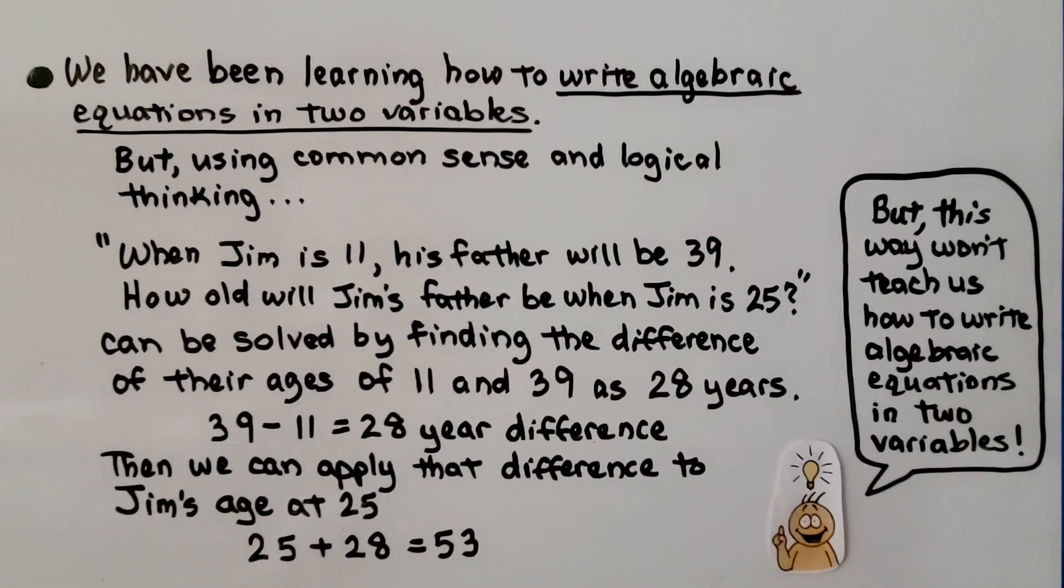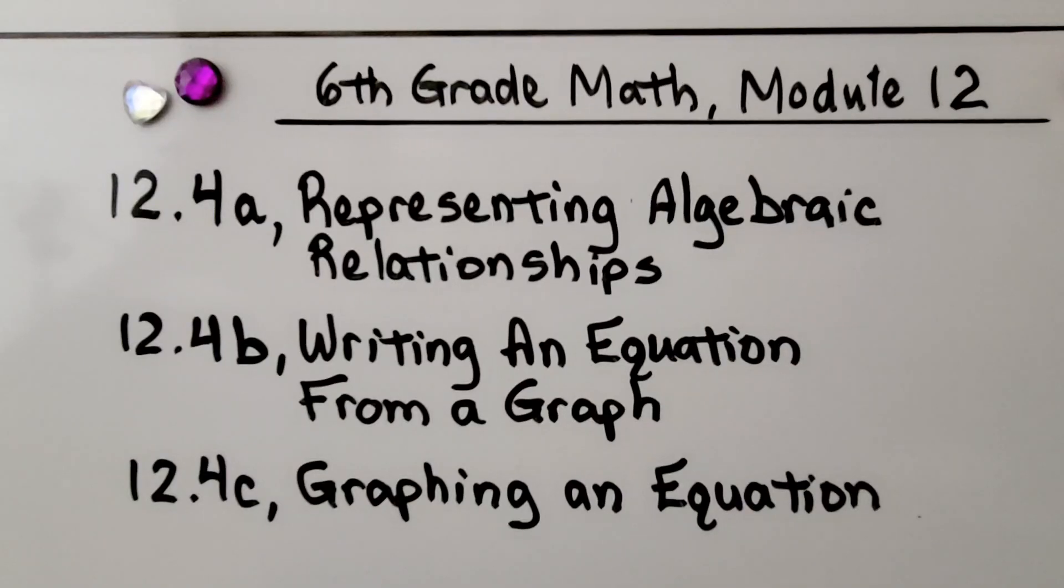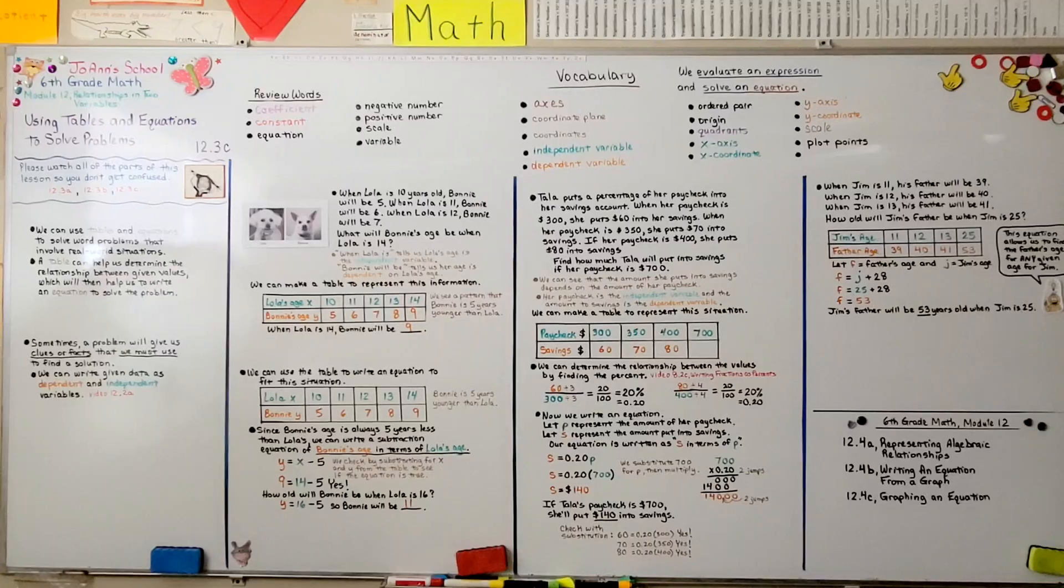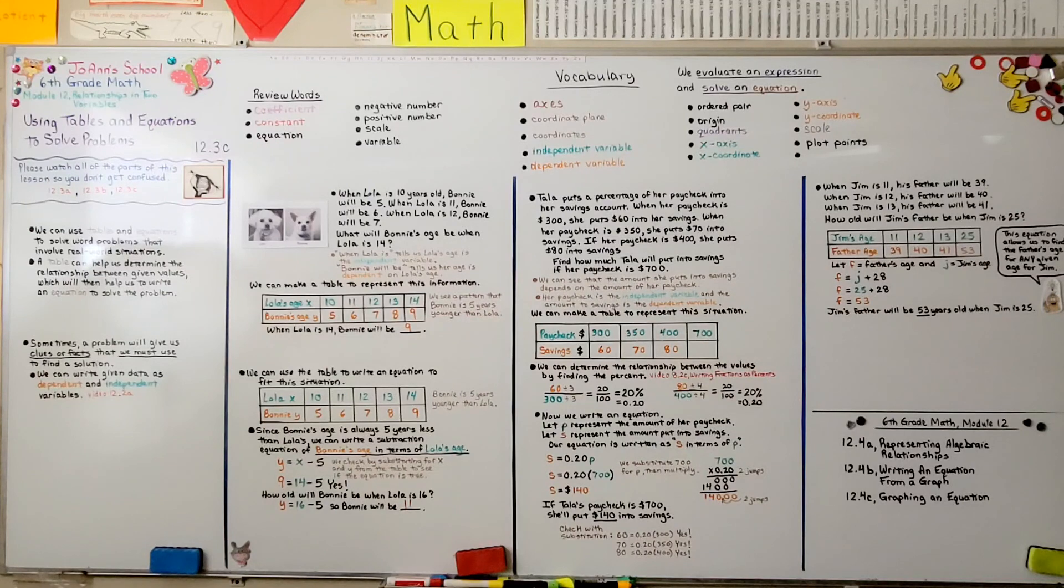So we're finished with 12.3. We're going to move on to 12.4, which is split into three parts. The first part is representing algebraic relationships. I'm really proud of you for learning algebra, and I hope you have a really nice day and join me for the next lesson. Bye.